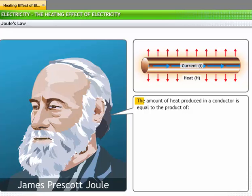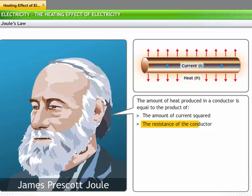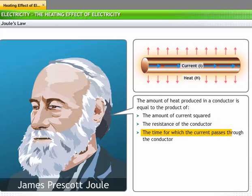Joule's law states that the amount of heat produced in a conductor is equal to the product of the amount of current squared, the resistance of the conductor, and the time for which the current passes through the conductor.